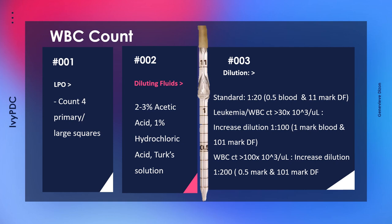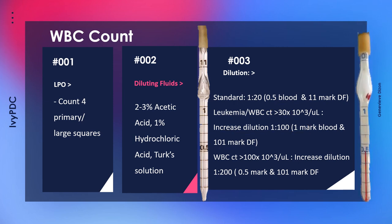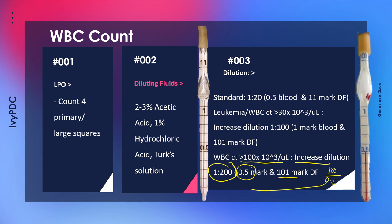In cases where the white blood cell count is more than 30,000 per microliter, we can increase the dilution to 1:100 by aspirating blood to the 1 mark and diluting fluid to the 101 mark using the RBC pipette. If the WBC count is higher — such as in some cases of leukemia where it can be 100,000–300,000 per microliter — we can increase the dilution further to 1:200 by aspirating blood to the 0.5 mark and diluting fluid to the 101 mark, giving 100 divided by 0.5 = 200.